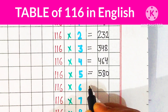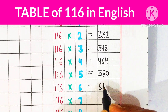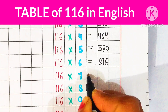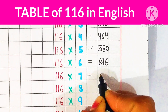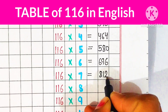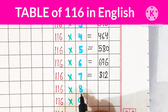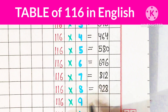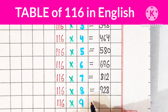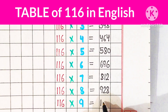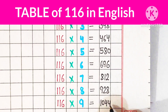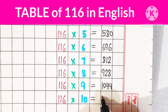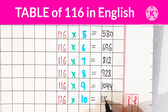116 6 are 696, 116 7 are 812, 116 8 are 928, 116 9 are 1044, 116 10 are 1160.